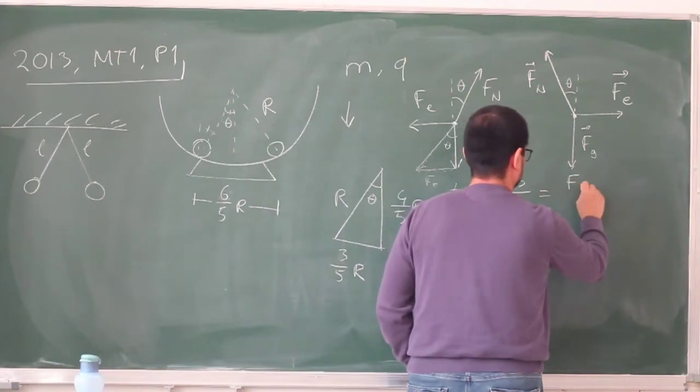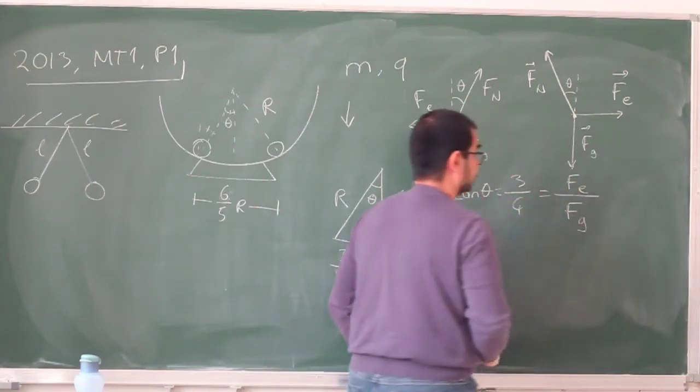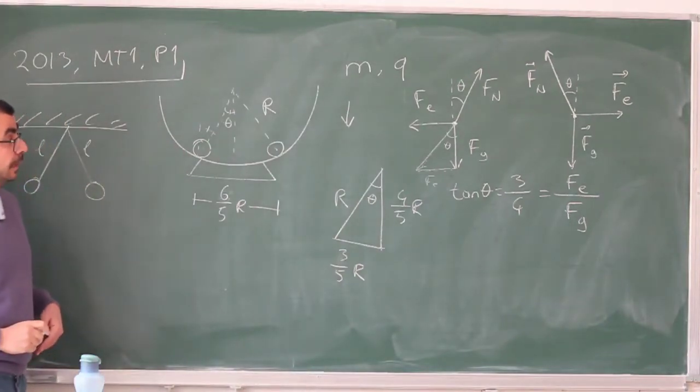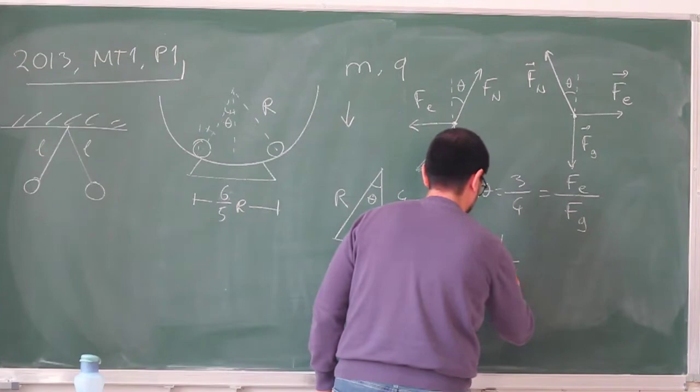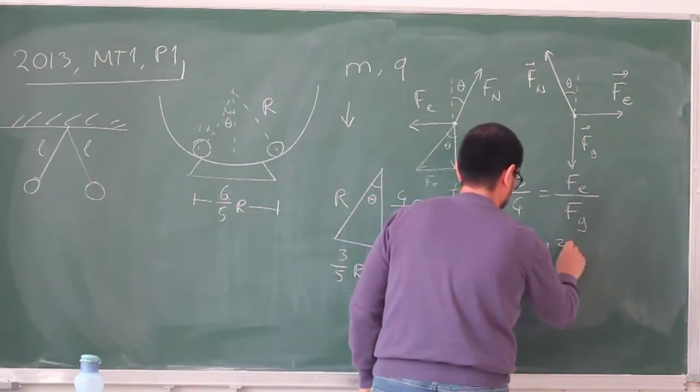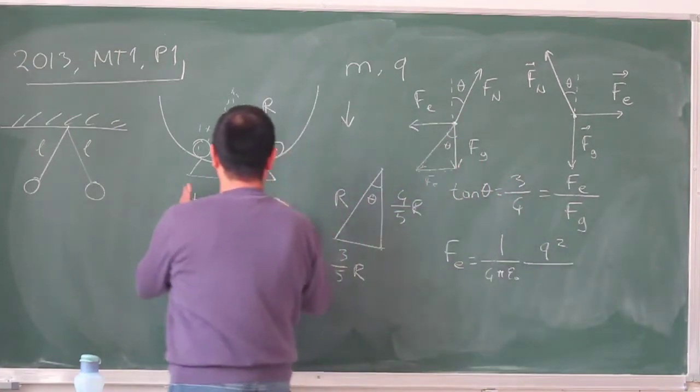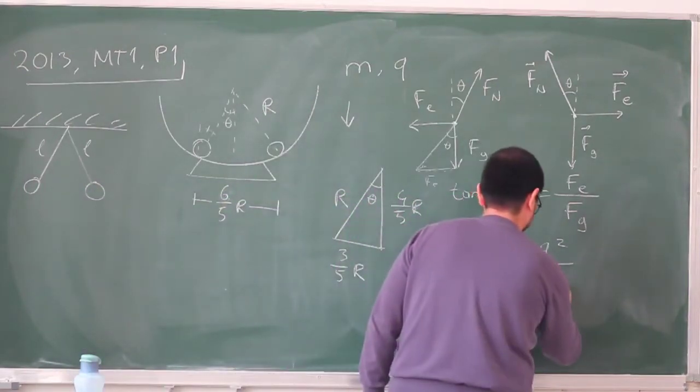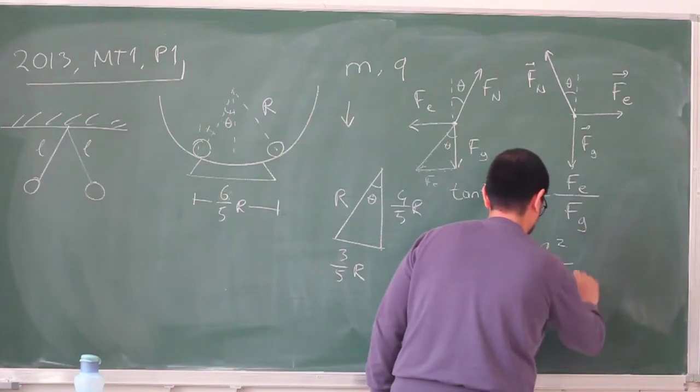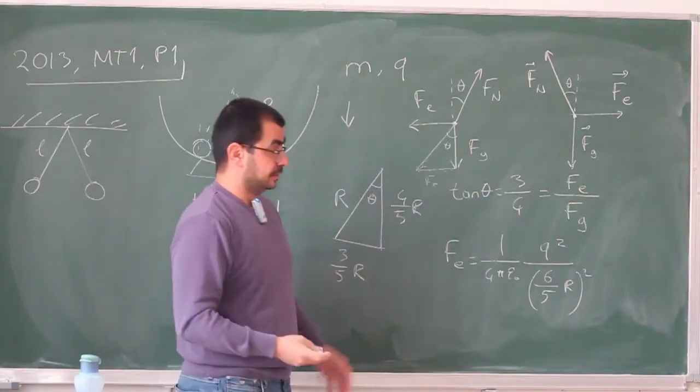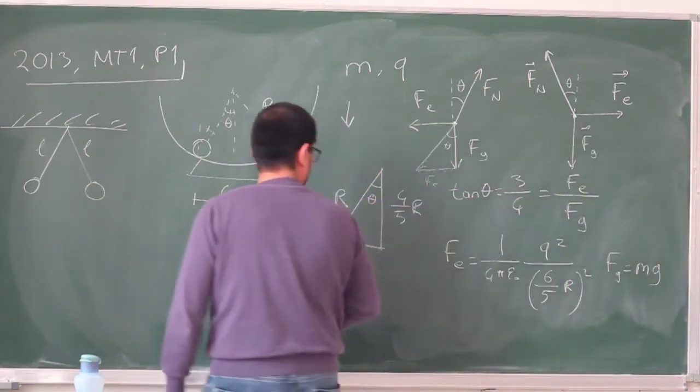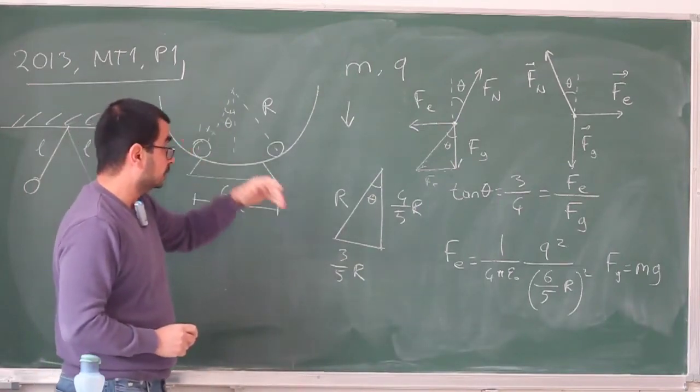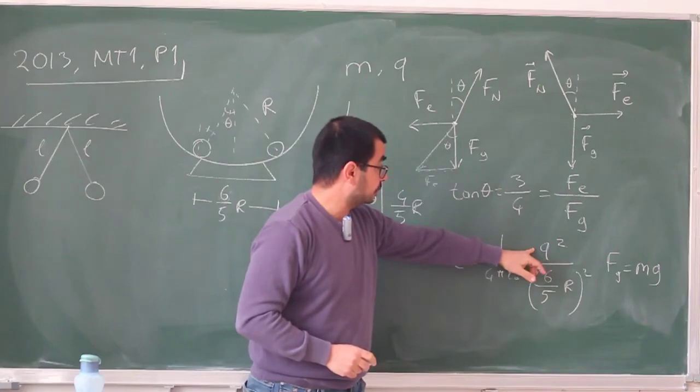And the tangent theta that I just wrote should also be the magnitude of the electric force divided by the magnitude of the gravitational force. And yes, this is a little bit complicated, but you can write it. So the magnitude of the electric force is just the Coulomb force between them. It's 1 over 4 pi epsilon 0, q squared divided by the distance over here, 6 fifths R squared. Square. And for gravity, it's trivial. It's just mg.